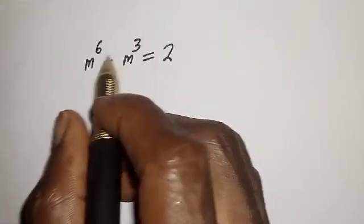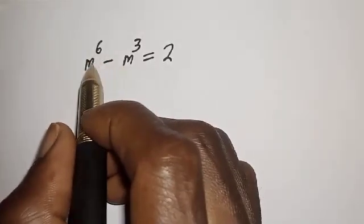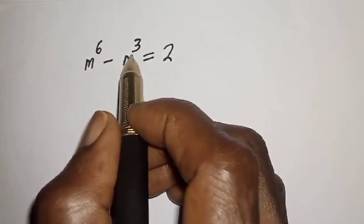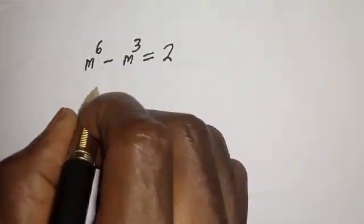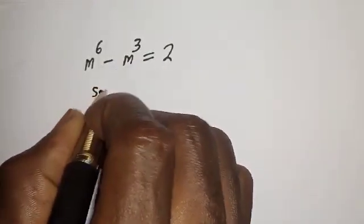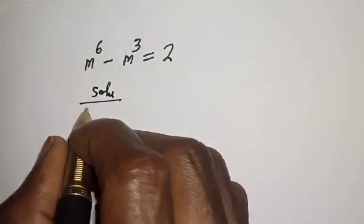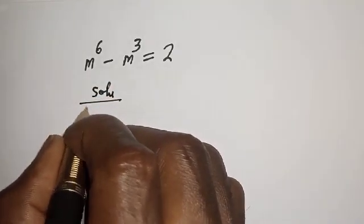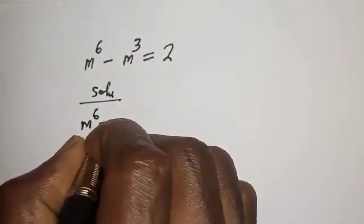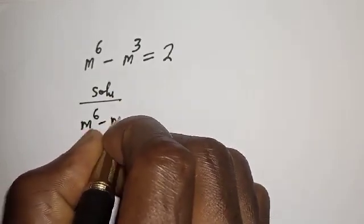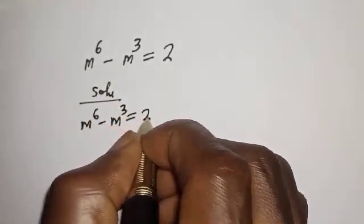Hello. How to find the value of m from this equation: m raised to power 6 minus m raised to power 3 is equal to 2. The given equation is m raised to power 6 minus m raised to power 3 is equal to 2.